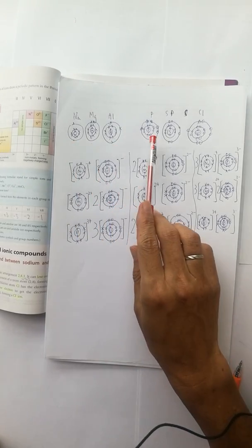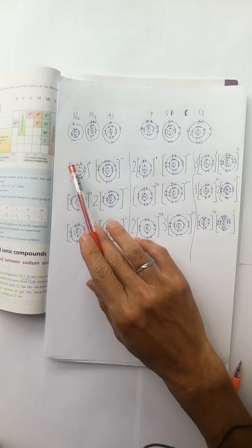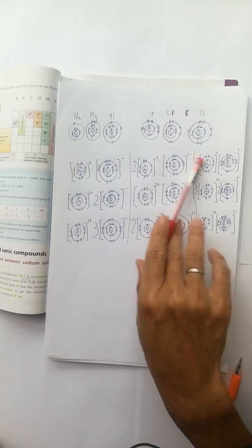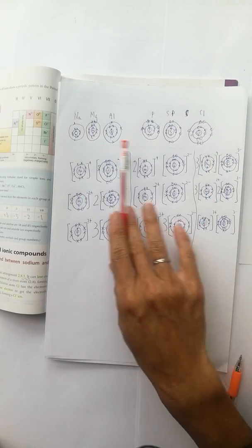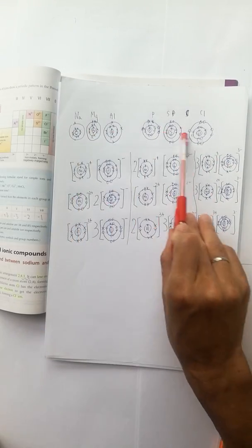Group 1, group 2, group 3, and group 5, group 6, and group 7. Ionic bonds formed in between them. And we are using the period 3 elements.